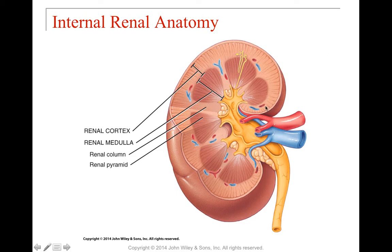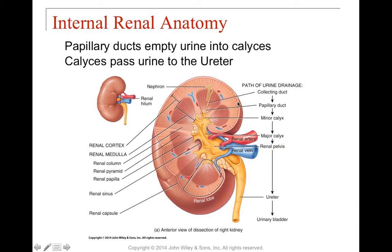Inside the kidneys we have the renal pyramids, which have the region where the tubules go in and urine is secreted into the ureters. The renal columns go in between the renal pyramids and anchor everything to the outer cortex. The renal medulla section is comprised of these renal pyramids, and at the bottom of each renal lobe we connect into the calyx, where urine is collected before heading to the ureter and urinary bladder.